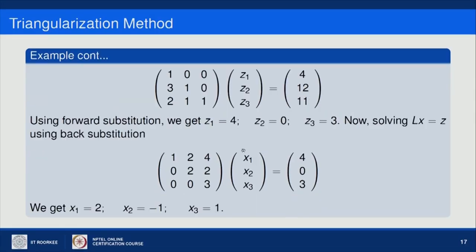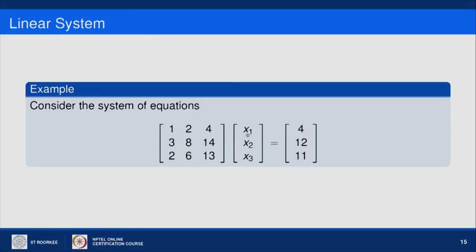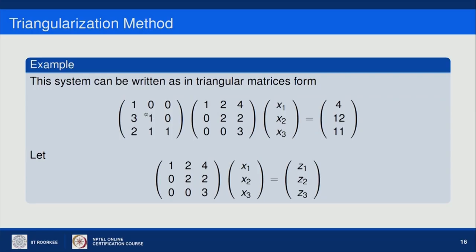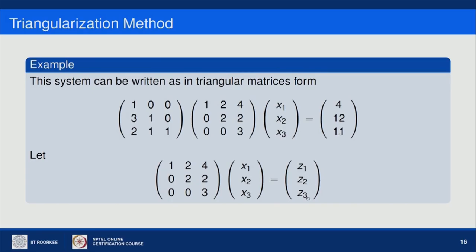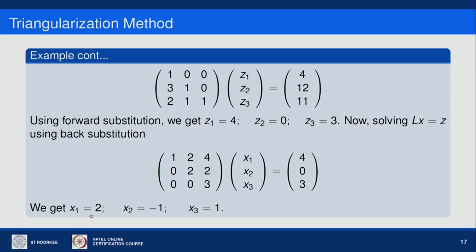Here is the working example. The system has coefficient matrix [[1,2,4],[3,8,14],[2,6,13]], which is the same matrix decomposed earlier. We write it as L·U·x = B. Assuming U·x = [Z1, Z2, Z3], using forward substitution we get Z1 = 4, Z2 = 0, Z3 = 3. Substituting these values back into U·x = Z and using back substitution gives X1 = 2, X2 = −1, X3 = 1, which is the solution of the system.